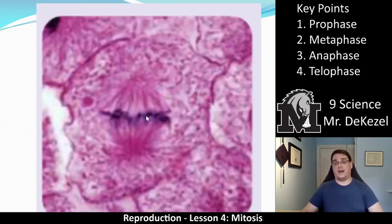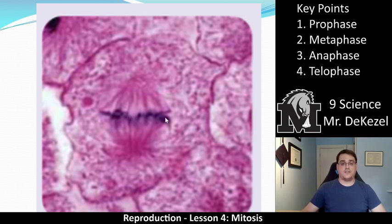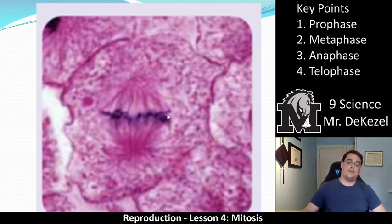The next photo is metaphase. You can see all of the chromosomes lining up along the center of the cell. There is a centriole at the top and a centriole at the bottom. You can see the spindle fibers reaching towards each chromosome, and they are about to be pulled apart. The chromosomes have lined up in the middle and are going to be pulled apart.